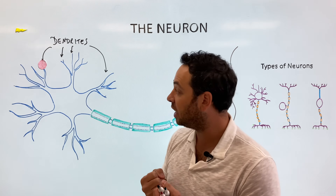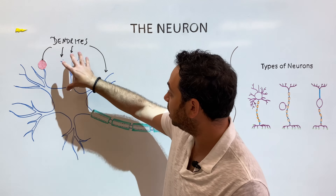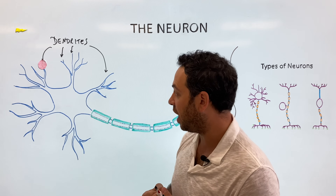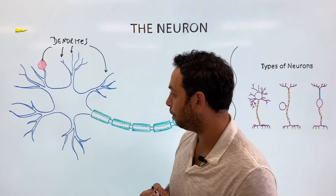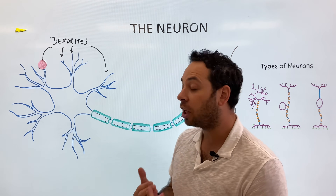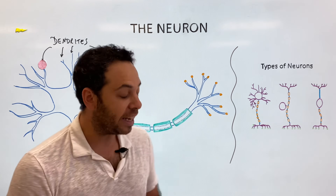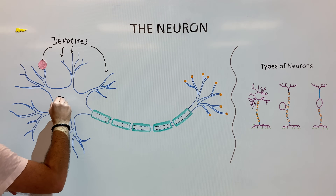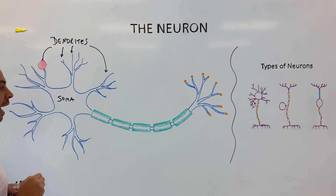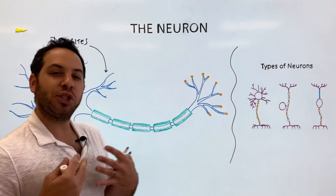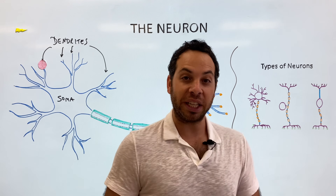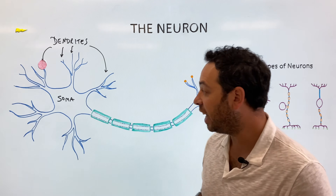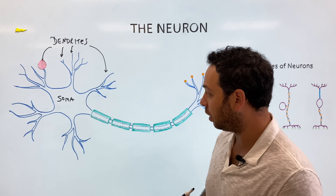The neurotransmitter is received like a lock and key — it's going to bind to the receptor site on a dendrite. Once it binds, it's going to be integrated and interpreted by the area called the soma, or cell body. The soma is where you find the nucleus — the genetic material of the neuron — and it helps sustain the life of the neuron as well.